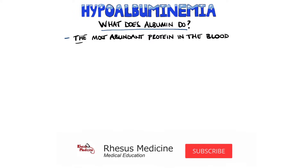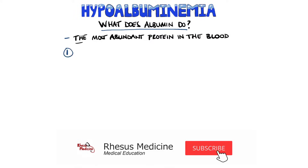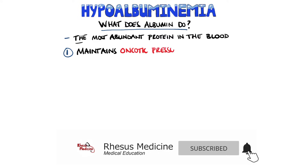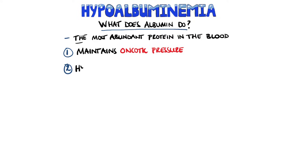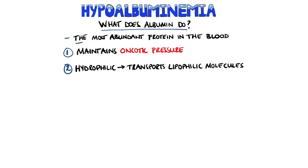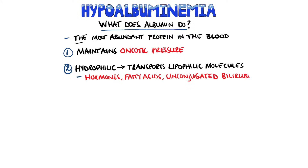It plays a key role in maintaining oncotic pressure in the blood, and since it is hydrophilic and therefore soluble in water, albumin can transport lipophilic compounds such as hormones, fatty acids, and unconjugated bilirubin through the blood.